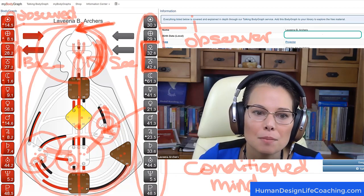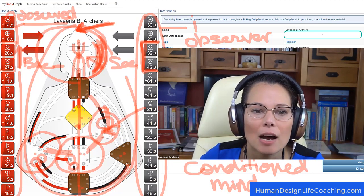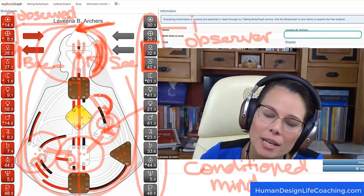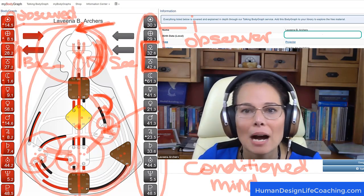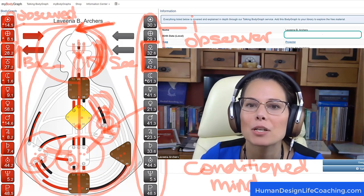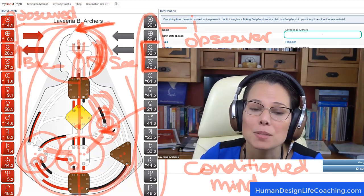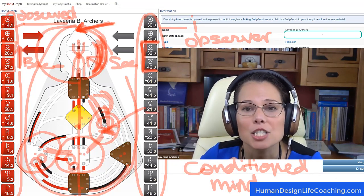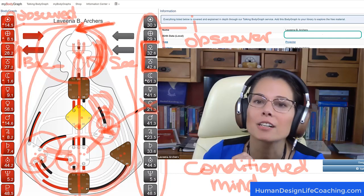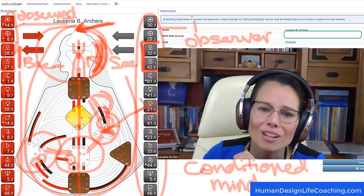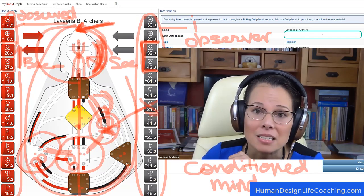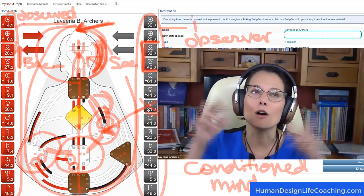So somebody comes in with that gate activation and now we have power struggles. We have power trips. We have domination and submission. We have power over and power under instead of power with because that's the dynamic I'm here to learn about in this life in specificity in relationships. Do I have a choice not to learn about power and control and helplessness? No, because that's my Venus.